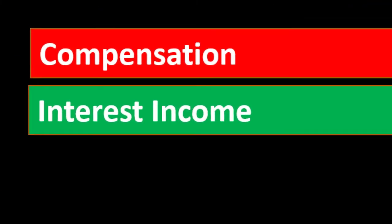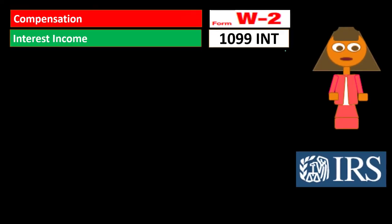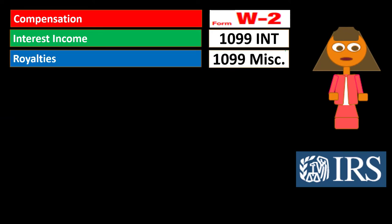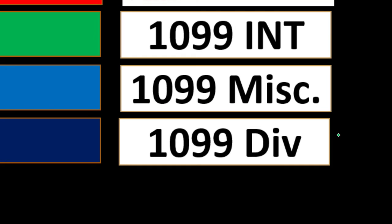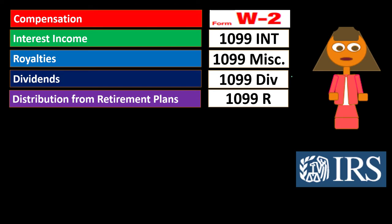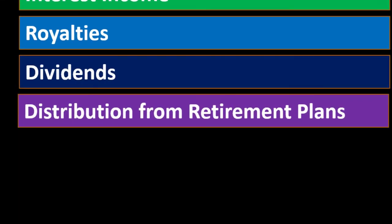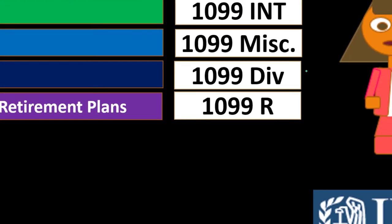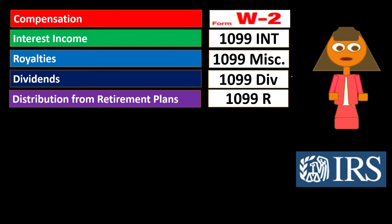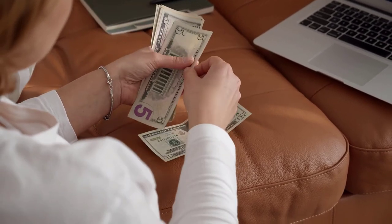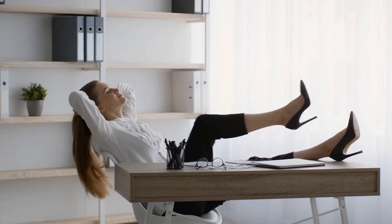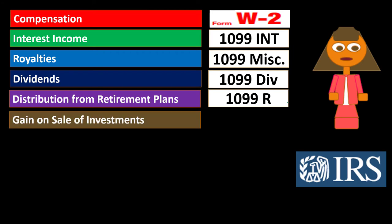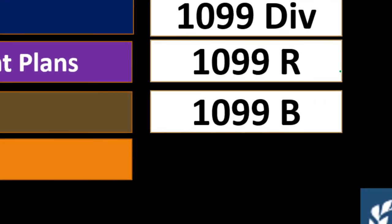Looking at specific income forms: interest income is reported via a 1099-INT, which you'll get from your bank — box numbers remain consistent across formats. Royalties are reported on a 1099-MISC. Dividends come on a 1099-DIV, typically from brokers for stocks and bonds. Distributions from retirement plans — more applicable to retirees drawing money out rather than contributing — are counted as income because they were tax-deferred up until the point of distribution, and that's when the income is recognized.